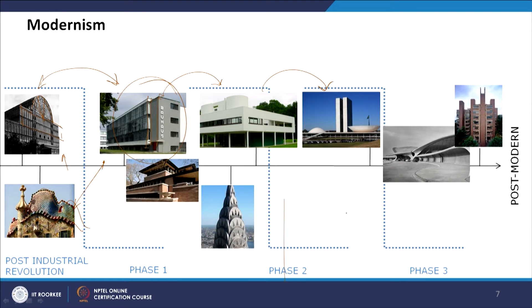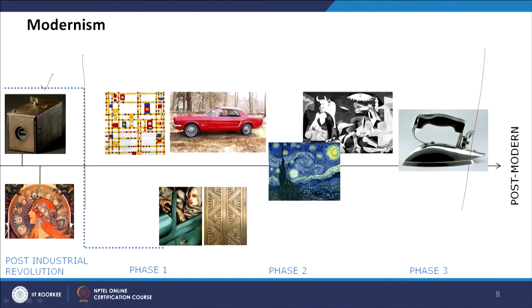Now looking at some buildings and paintings and industrial design of modernism — machine-made design and biomorphic art nouveau design — we see that parallel to Bauhaus is the De Stijl movement. We will discuss what the similarities are. We also see similarity in automobile design, and there was a connection between cubism and De Stijl.